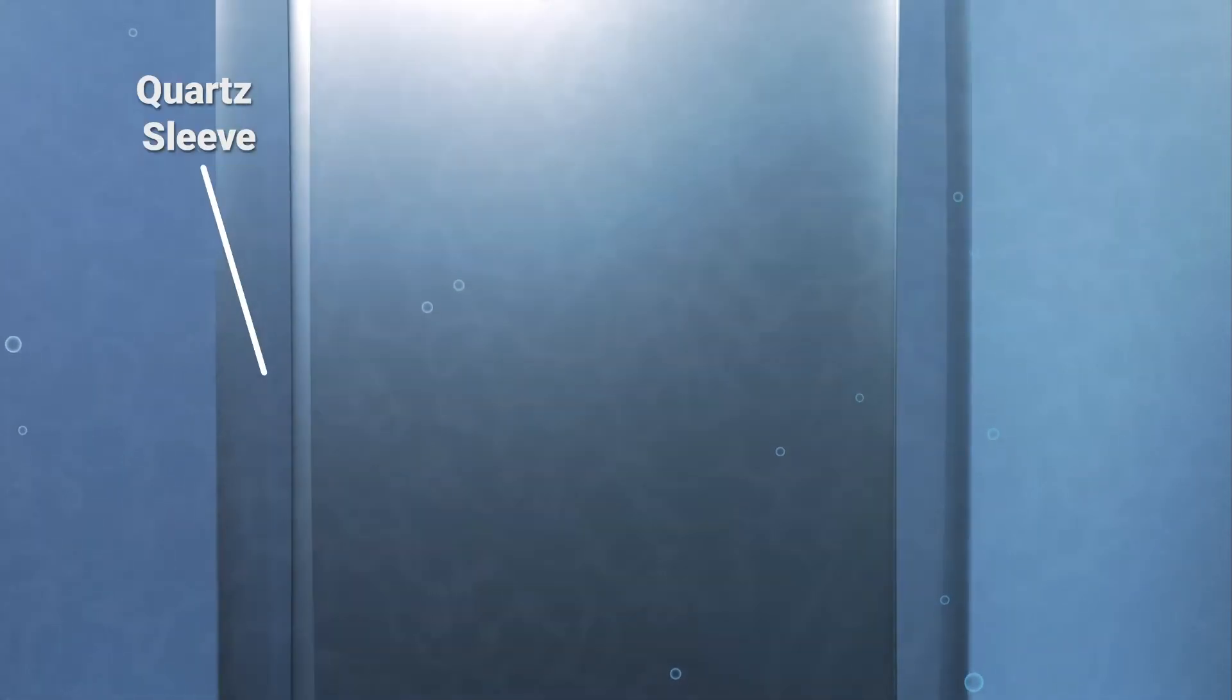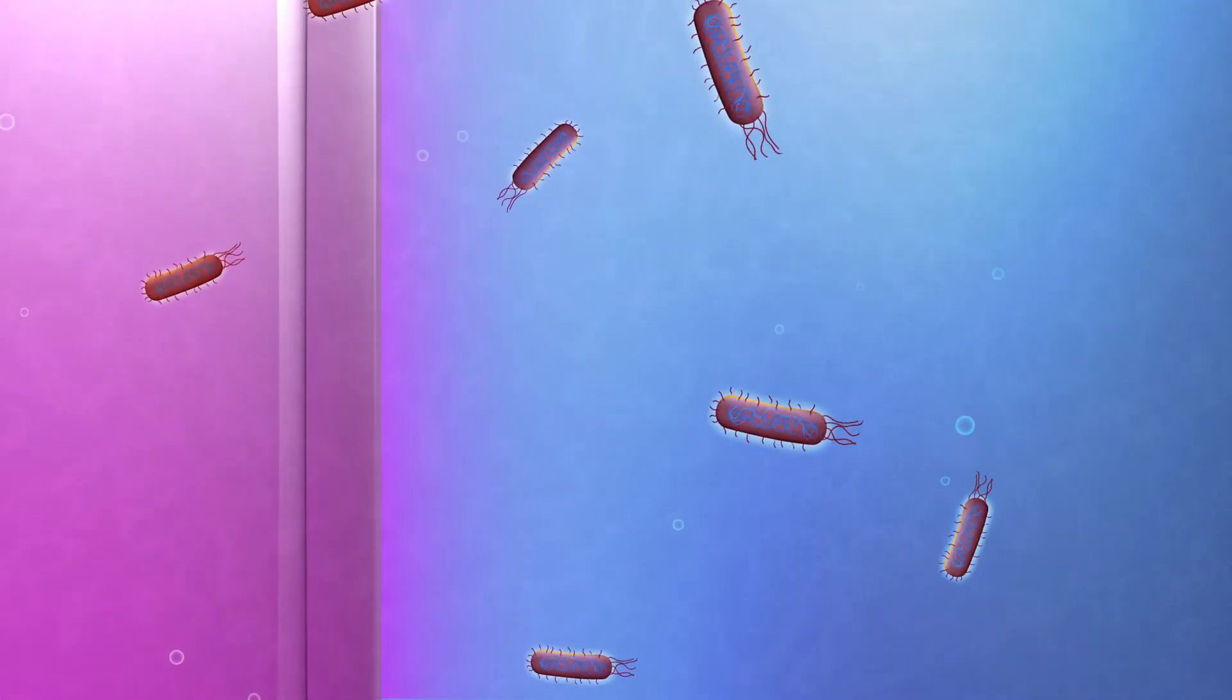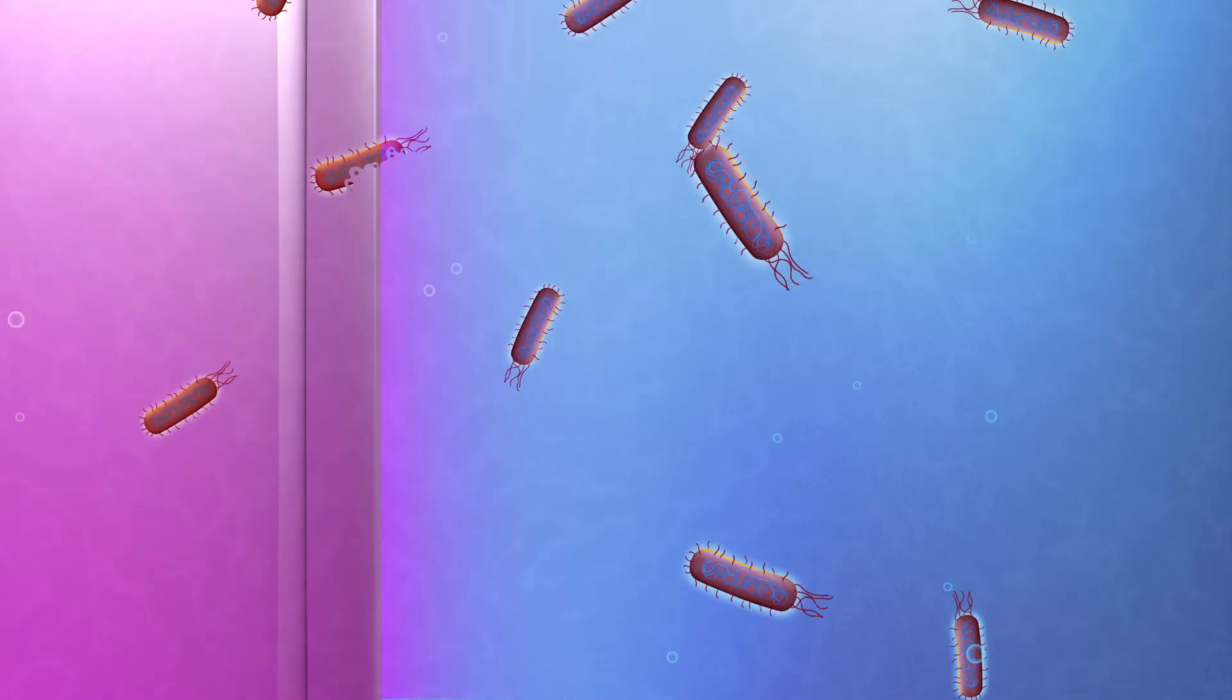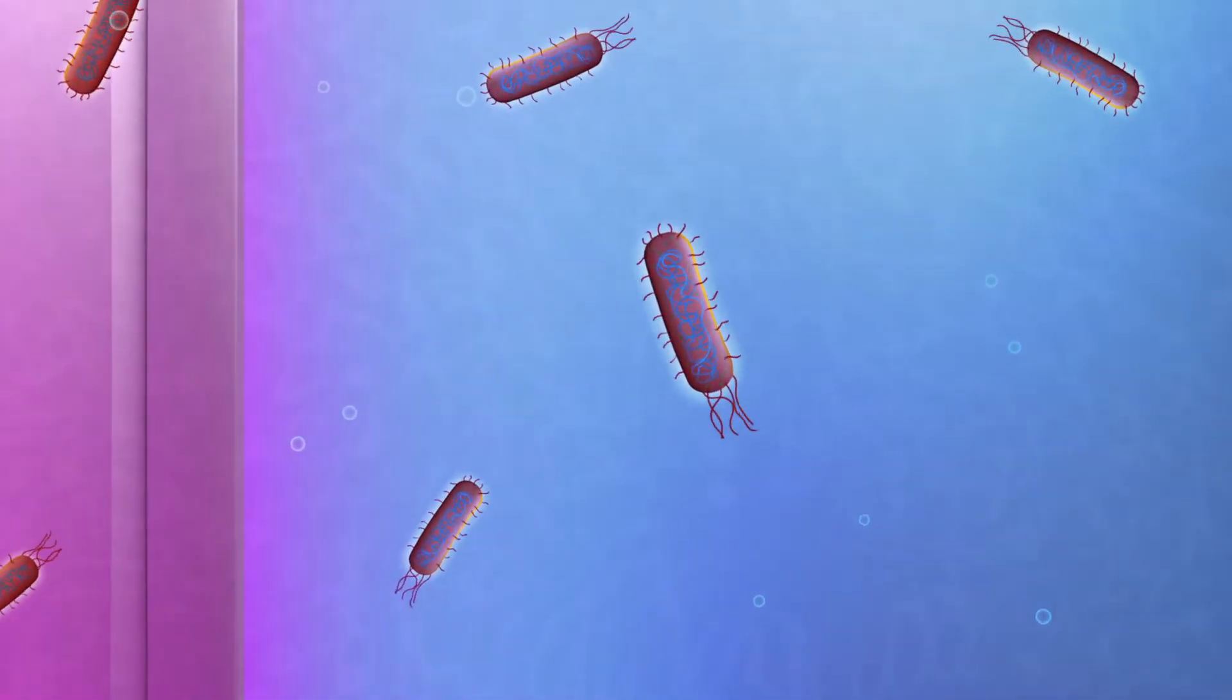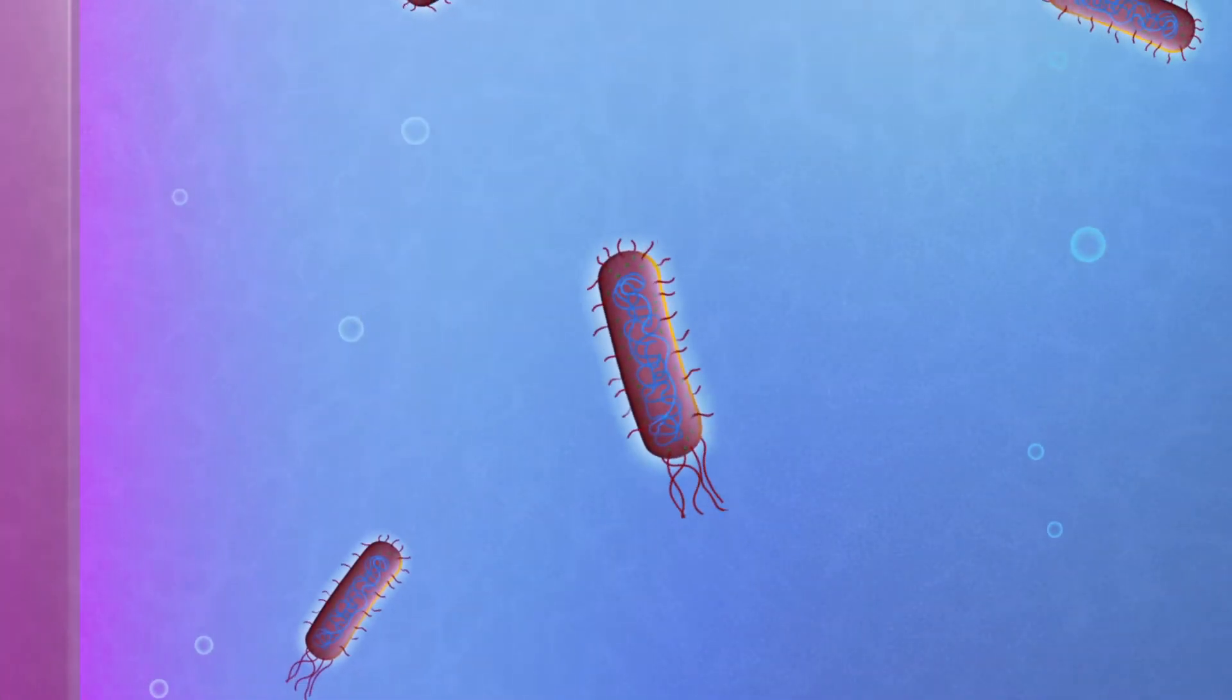Ultraviolet or UV light uses radiation to disinfect. As water passes through a tube, it's exposed to ultraviolet light. When water is exposed to light for enough time, microbes in the water are exposed to UV radiation. This changes the DNA of microbial cells, killing them.